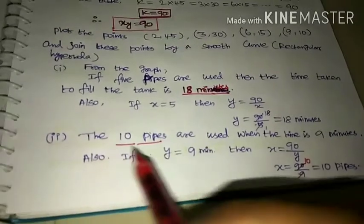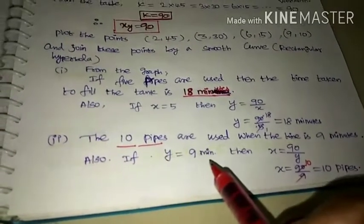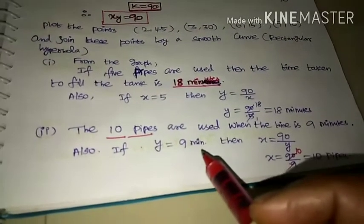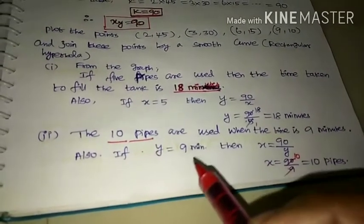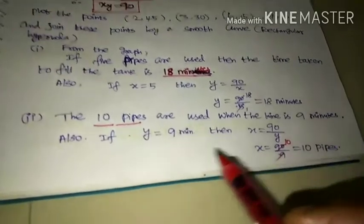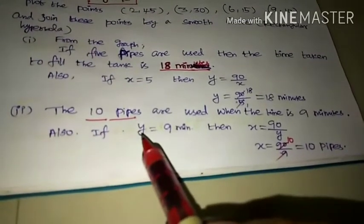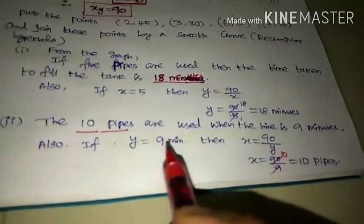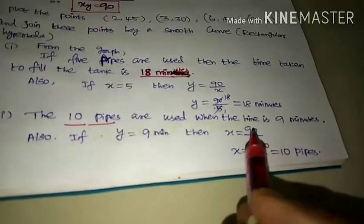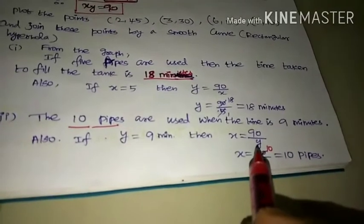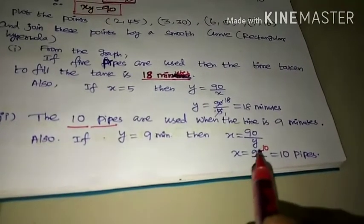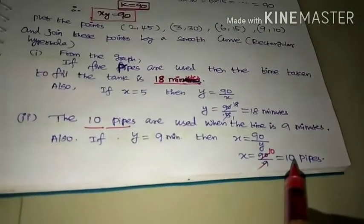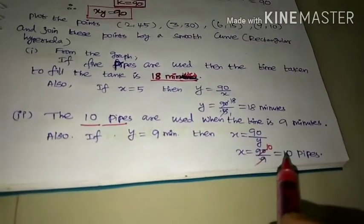The second question: find the number of pipes when the time is 9 minutes. Here y equals 9. Using the equation xy equals 90, we get x equals 90 by y equals 90 by 9 equals 10. So the number of pipes is 10 pipes.